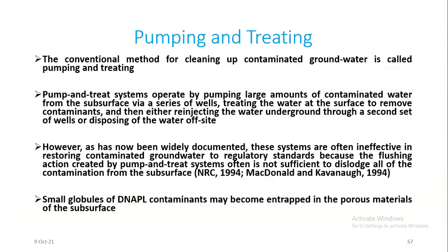The first water remediation strategy is pumping and treating. The conventional method for cleaning up contaminated groundwater is called pump-and-treat. These systems operate by pumping large amounts of contaminated water from the surface via a series of wells, treating the water at the surface to remove contaminants, and then either re-injecting the water underground through a second set of wells or disposing of the water off-site. However, these systems are often ineffective in restoring contaminated groundwater to regulatory standards because the flushing action is often not sufficient to dislodge all contamination from the subsurface. Small globules of DNAPL contaminants may become entrapped in the porous materials of the subsurface.